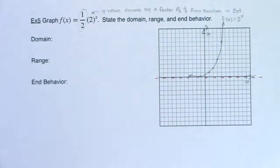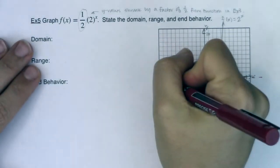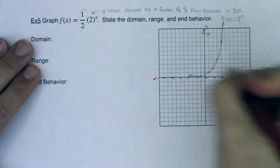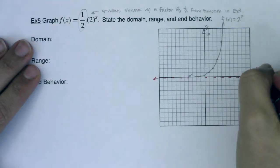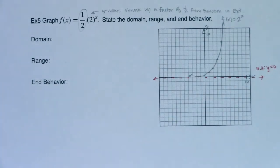I'm going to go ahead and draw in my horizontal asymptote. There we go. We've got a horizontal asymptote at y equals 0. So with that, let's go fill in our traits.